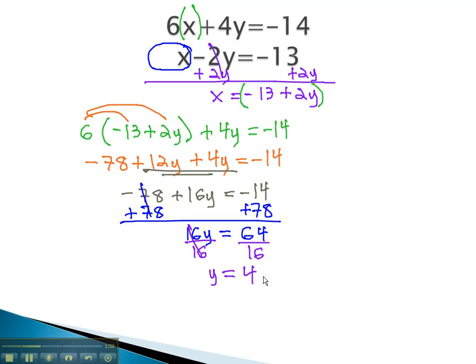Again, we still must find x, and we find that by taking our value for y and plugging it into the x equals equation to find what x equals. x is equal to negative 13 plus 2y. We just found out y is 4.